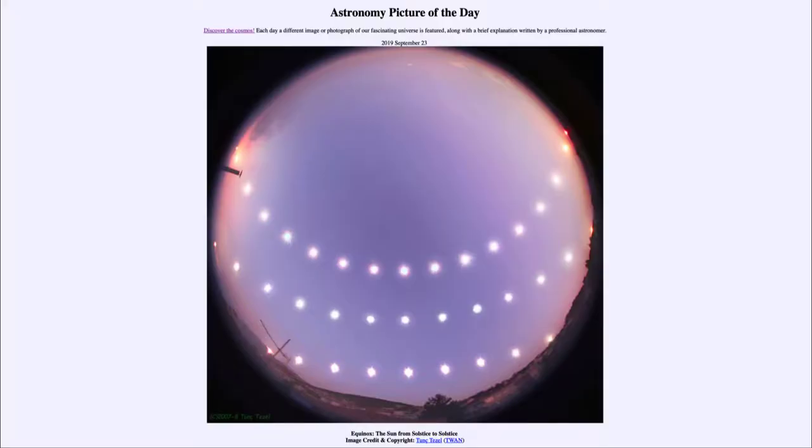Greetings and welcome to the introduction to astronomy. One of the things that I like to do in each of my introductory astronomy classes is to begin the class with the astronomy picture of the day from the NASA website, apod.nasa.gov/apod. Today's picture for September 23rd, 2019 is titled Equinox: The Sun from Solstice to Solstice.